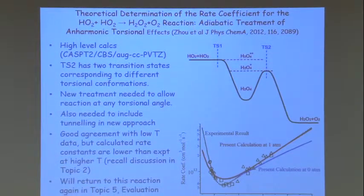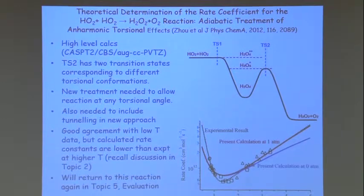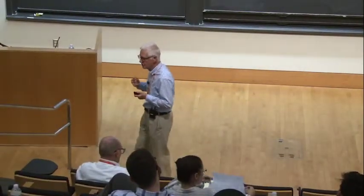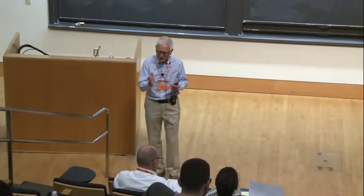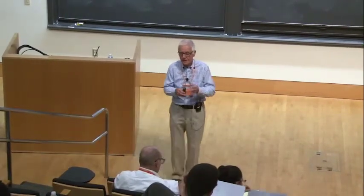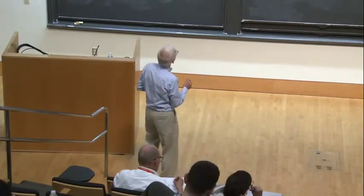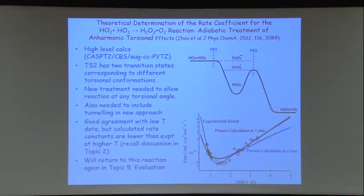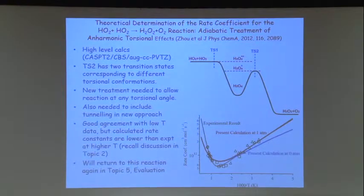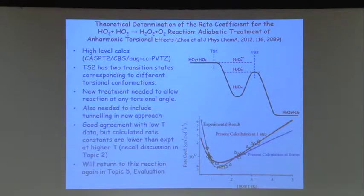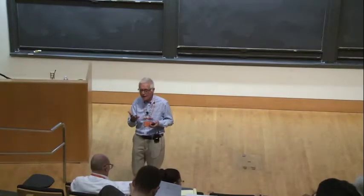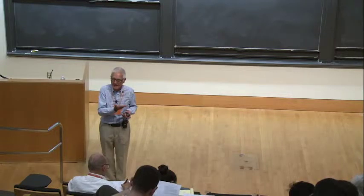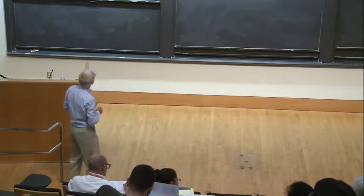We then talked about situations where there are multiple transition states. As you come in from the reactants going through to the products, there may be more than one transition state. At high temperatures, the rate constant turns out to be determined by the inner transition state — so for HO2 plus HO2, the inner transition state dominates — while at lower temperatures it is determined by the outer transition state. I talked about OH plus DME and showed how you can get really quite interesting effects as you go to very low temperatures as that outer transition state becomes more and more important.